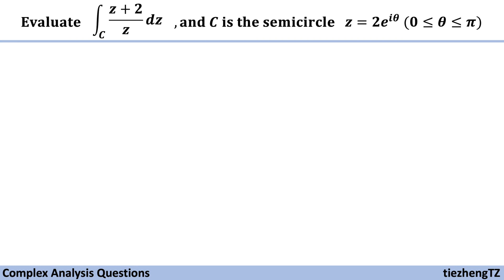So first, when we see this question, we know we are going to use this contour integral function to solve. Basically, integral C f(z) dz equals integral from a to b, f(z(t)) times z'(t) dt, to change from dz to dt. And in our case, we are going to change dz to d theta.